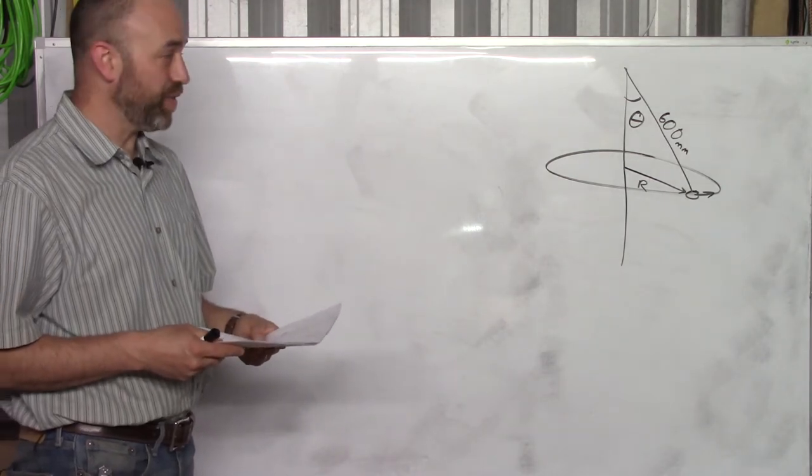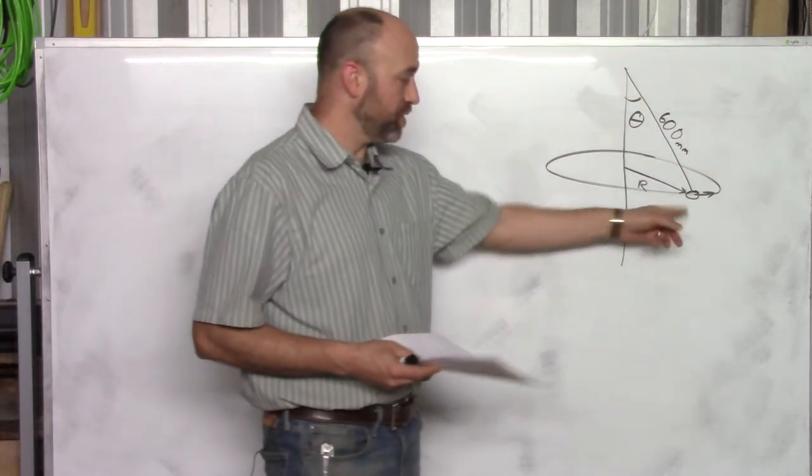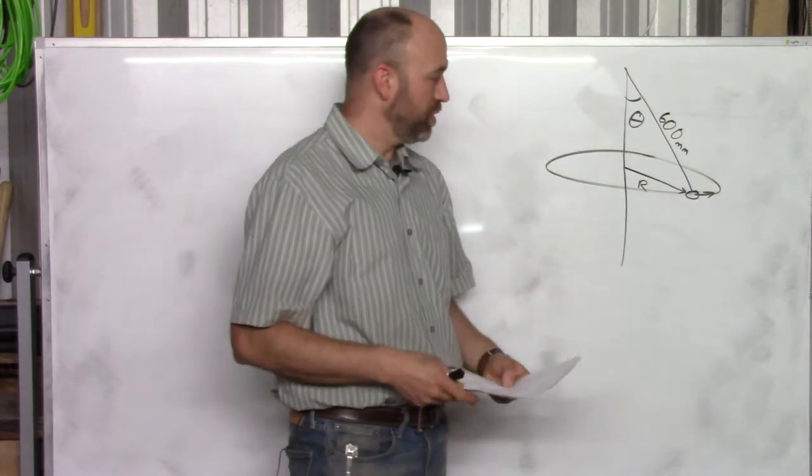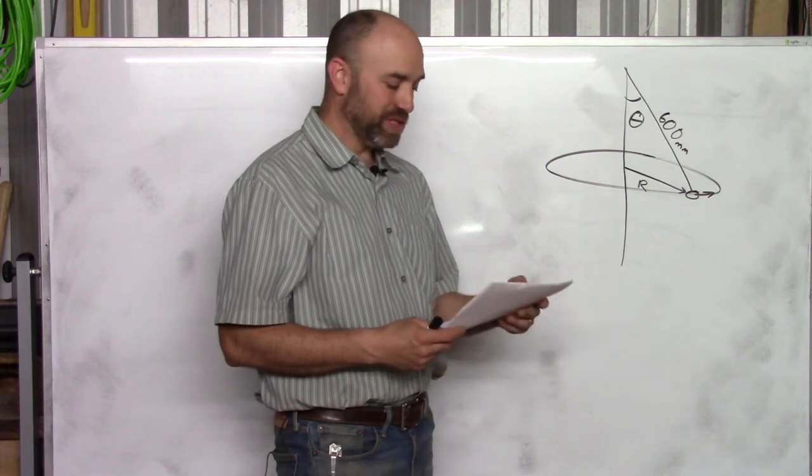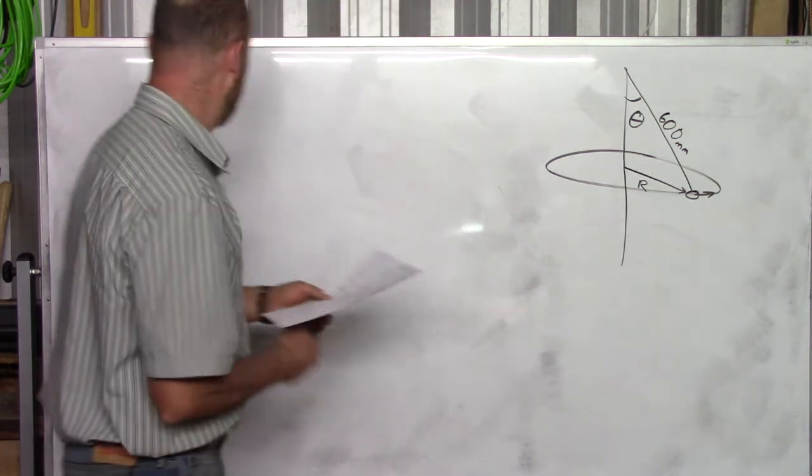Part A is just asking you to find theta. You've got a ball on a string, it's going in a circle, and it tells you the speed and gives you the mass. Let me write that down.